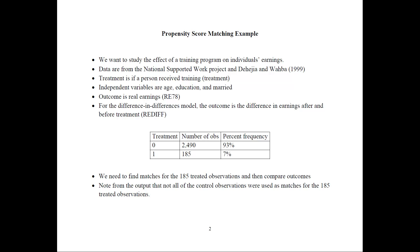Independent variables would be age, education, and married. The outcome variable would be real earnings, RE78 in the data set. For the difference in differences model, the outcome will be the difference in earnings after and before the treatment, or real earnings difference, REDIF.